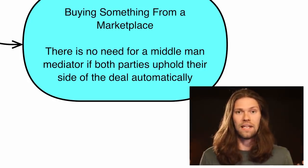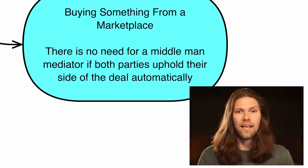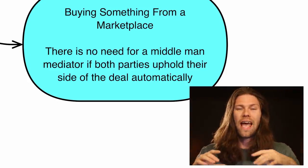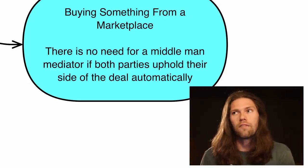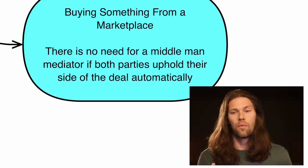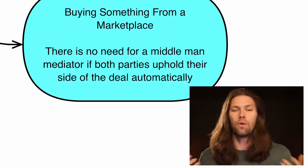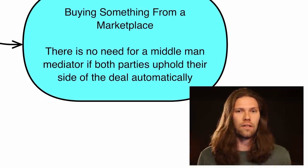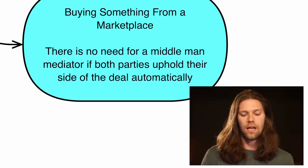Buying anything from a marketplace could be replicated and made better by a smart contract. There's no need for a middleman mediator if both parties uphold their side of a deal automatically. You don't need eBay or Amazon for a direct seller — if there's a smart contract that says you pay X amount of dollars and receive item A, it can literally be that simple. Each of these examples could go much more in depth, and there are kinks to be worked out.